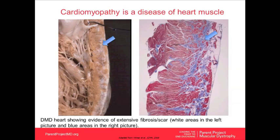Here is a pathologic specimen showing fibrosis forming within the heart muscle. The blue arrow is pointing to white areas within an autopsy specimen, which represent fibrous tissue or scar. The blue areas in the pathology specimen also demonstrate areas of scar. As the process in Duchenne muscular dystrophy progresses, scar tissue forms in the heart muscle, which eventually causes the heart to become dysfunctional — that is what the term cardiomyopathy refers to.